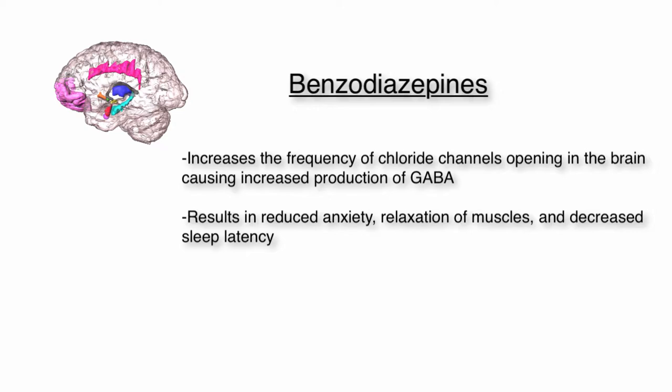Benzodiazepines can also be used to treat generalized anxiety disorder. Benzodiazepines increase the frequency of chloride channels opening in the brain. The more the chloride channels open, the more the hormone GABA is produced. GABA is an inhibitory hormone that works in the limbic system and in the reticular formation, both of which are involved in the mesolimbic system. The production of GABA makes brain cells unable to be excited, resulting in reduced anxiety, relaxation of muscles, and a decrease in the time it takes to fall asleep.